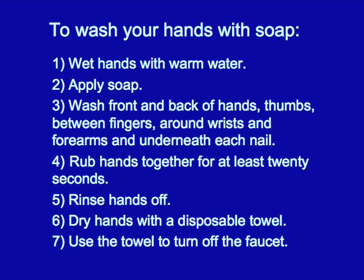To wash your hands correctly with soap and water, first wet your hands with water. If possible, this should be clean, warm water. Apply soap. Wash the front and back of your hands, your thumbs, between the fingers, around the wrists and forearms, and underneath each nail. Remember to rub your hands together for at least 20 seconds. Rinse your hands off. Dry your hands with a clean, disposable towel if available. If no towel is available, do not use your clothes or a towel that has been used by others. In this case, it is best to let your hands dry naturally in the air.